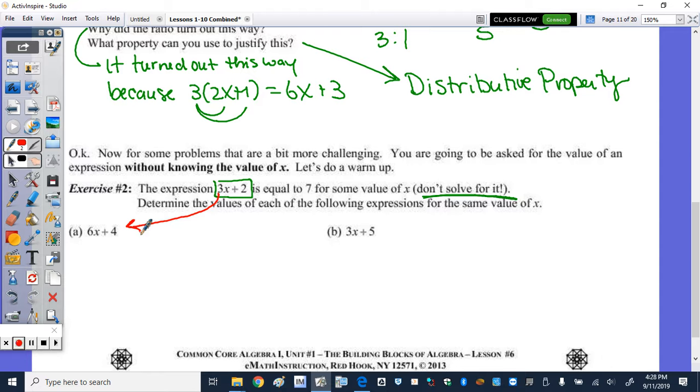So this 6x plus 4, as I said, 2, the GCF would be 2. This is equal to 2 times 6 divided by 3, 3x plus 2. 6x plus 4 is the double of 3x plus 2. So since I know that this is equal to 7, because they told me, this is really 2 times 7, or 14.